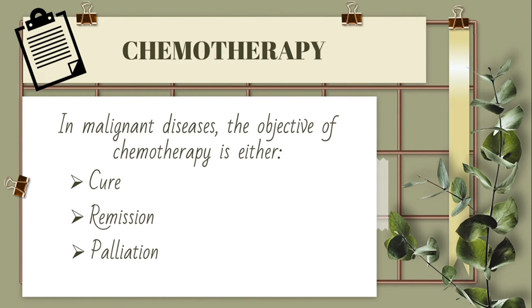Chemotherapy and Malignant Diseases. The objective of chemotherapy is either: Cure, when all cancer cells have been eradicated; Remission, when all clinical evidence has disappeared but microscopic foci of cancer cells do exist; or Palliation, which is remission of secondary signs without appreciable increase in survival time.